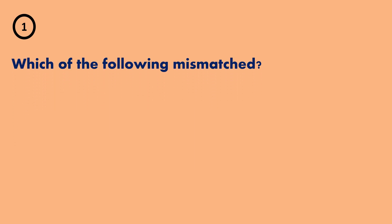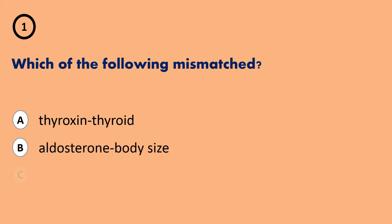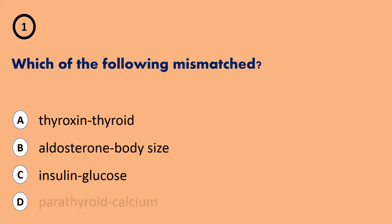A - Thyroxine, thyroid. B - Aldosterone, body size. C - Insulin, glucose. D - Parathyroid, calcium.